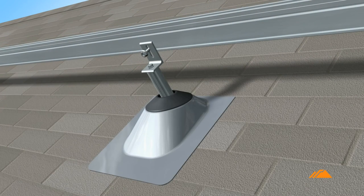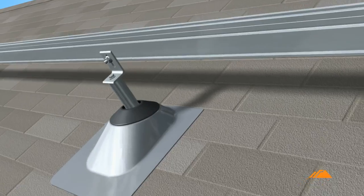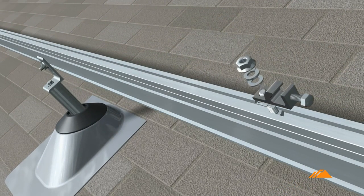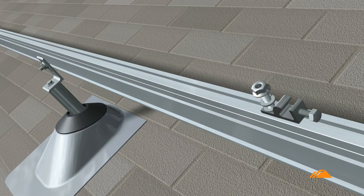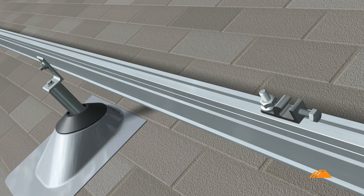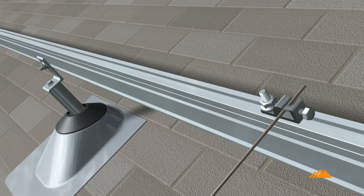Mount the rails to the L-feet. Attach a grounding lug to the same rail as the grounding straps. Secure the grounding conductor within the lug.